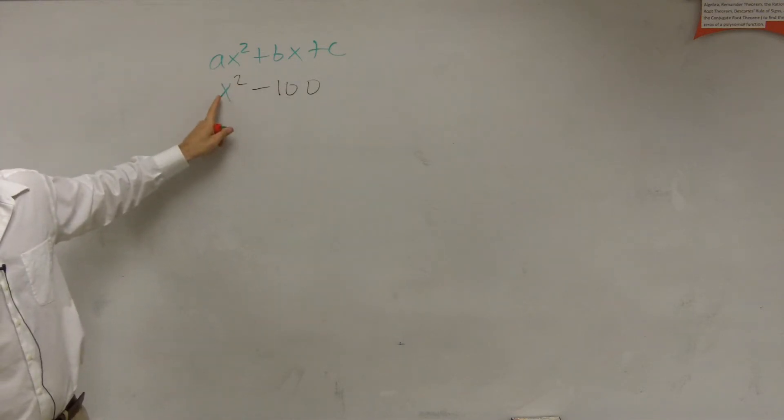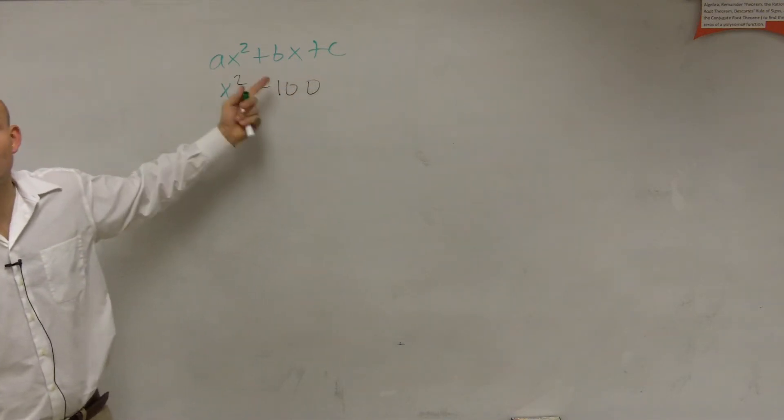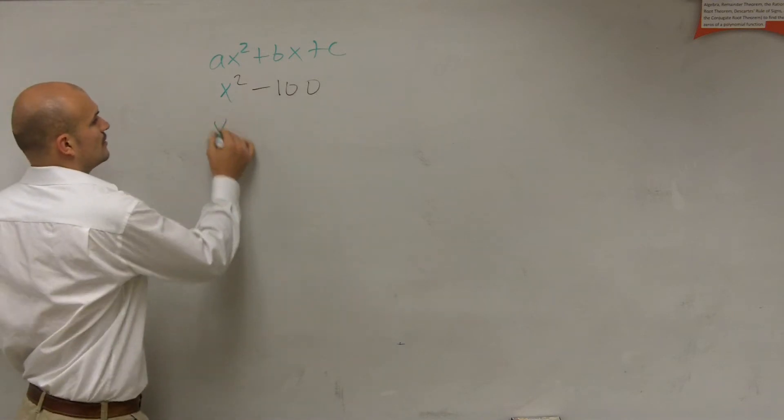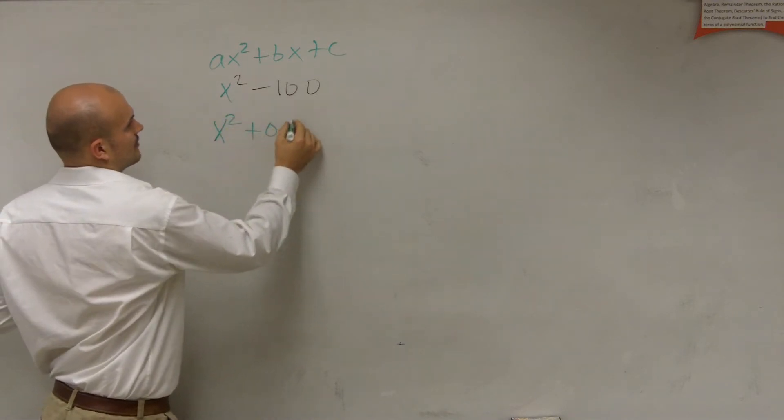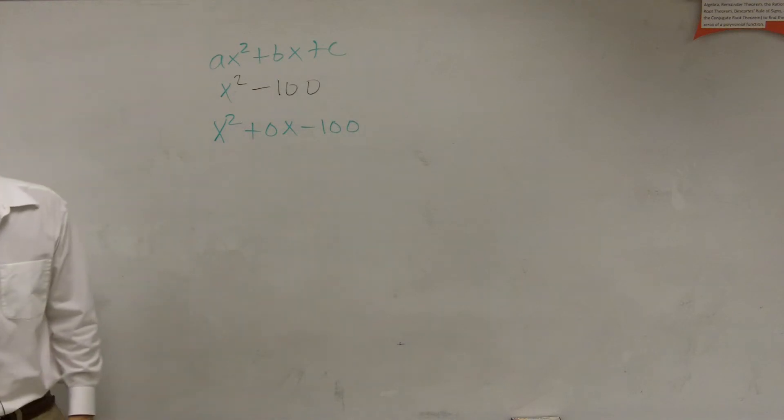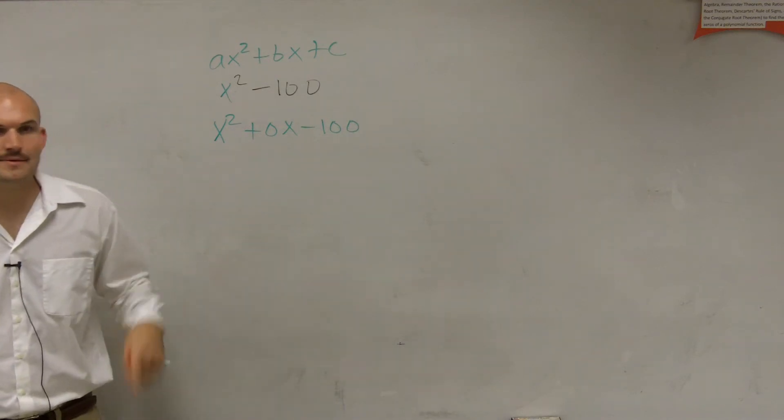Where a is our number in front of x squared and c is your constant, well we don't have a b. So let's write in a b, then do the same thing.